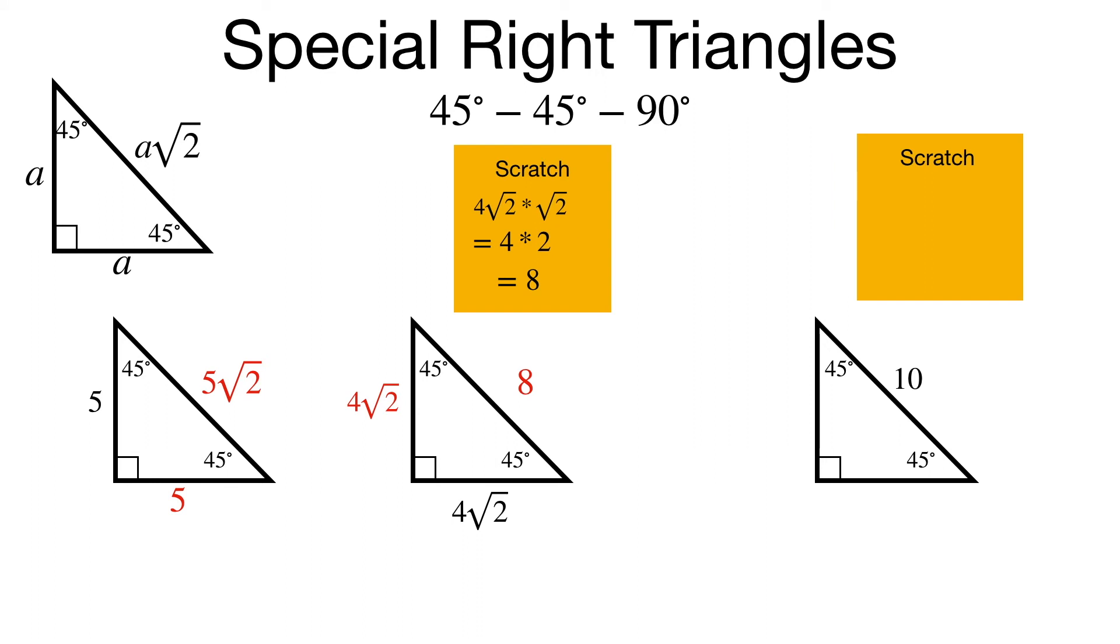But I have to rationalize that denominator. I can't have an irrational number in a denominator. So I'm going to multiply by 1, but a special version of 1, the square root of 2 over square root of 2. Multiply across for the numerators, you get 10 square root of 2. With the denominators, the square root of 2 times the square root of 2 is 2. Nice rational number.